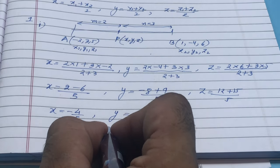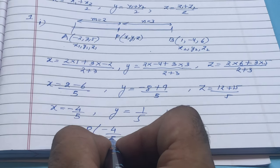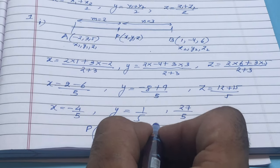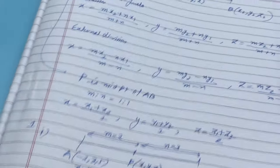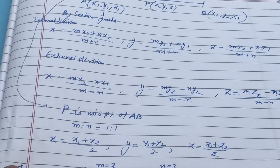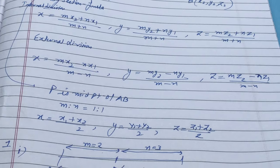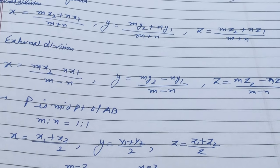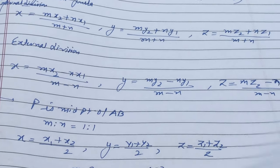The P point in internal division has coordinates: P = (-4/5, 1/5, 27/5). For external division, there is no need to redraw the figure. In external division, the formulas change to minus signs: x = (mx2 - nx1)/(m-n), y = (my2 - ny1)/(m-n), z = (mz2 - nz1)/(m-n). Using the same figure directly.